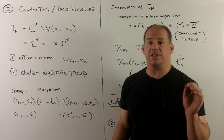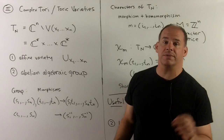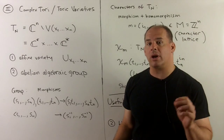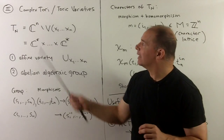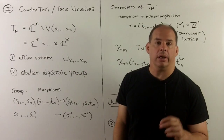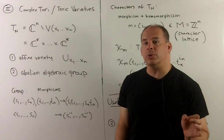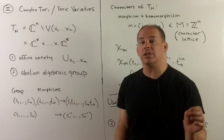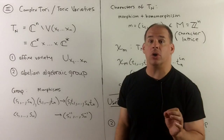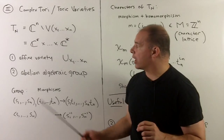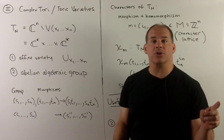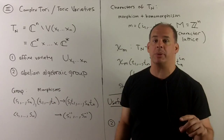For this section, we give several definitions of toric varieties. The main ingredient in toric varieties is complex tori. You're probably used to using tori as a product of S¹s, of circles. For a complex torus, we're just going to use a product of C-stars — we take the complex plane and punch out the origin.